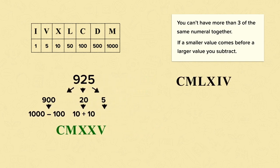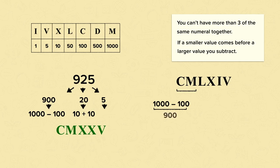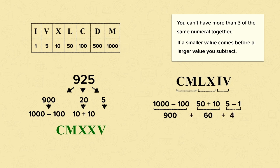Now let's look at this set of Roman numerals and see if we can work out what number it represents. Starting with the hundreds: C, M — M is 1000 but it has a smaller value before it. C is 100, so we subtract: 1000 subtract 100 is 900. Now the tens: L, X — L is 50 and X is 10, so 50 and 10 is 60. And now the ones: I, V — I is a smaller value than V, so we subtract. V is 5 and I is 1, so 5 subtract 1 is 4. Adding these totals together: 900 add 60 add 4 gives us 964.